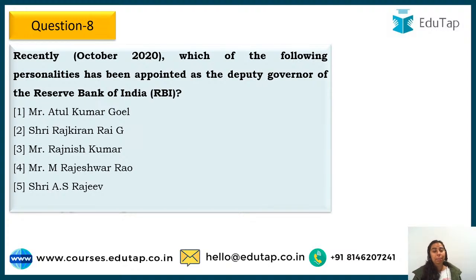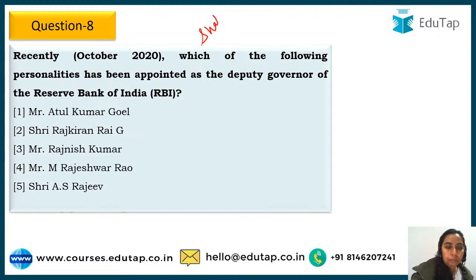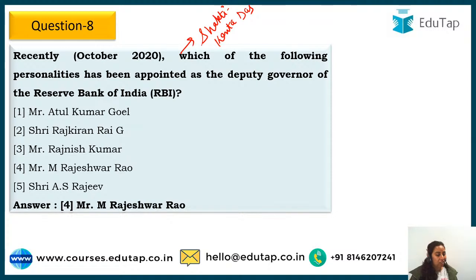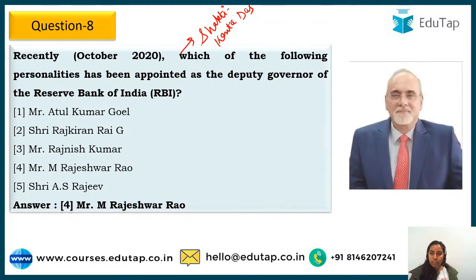Question 8: Which personality has been appointed as Deputy Governor of Reserve Bank of India? Shaktikanta Das is currently the Governor. The recently appointed Deputy Governor is M. Rajeshwar Rao — that is absolutely correct. He has been appointed as the Deputy Governor of Reserve Bank of India. RBI has four deputy governors; this is one of them.